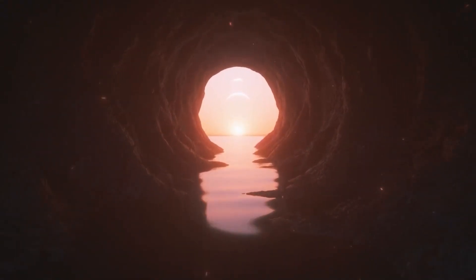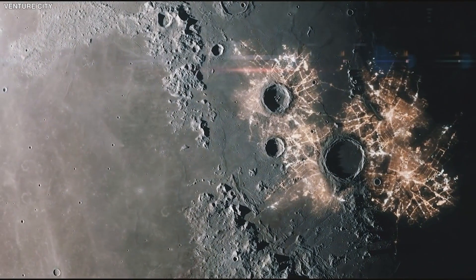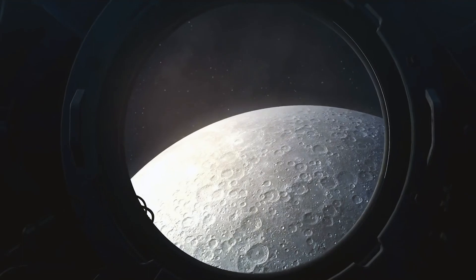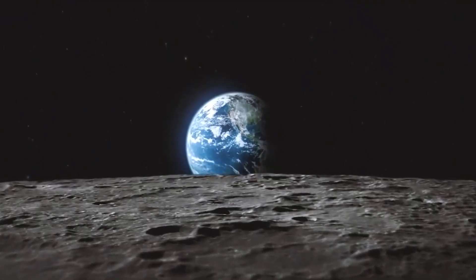Another problem is that the bright side of Proxima B is exposed to a lot of X and UV radiation. Hence, the likelihood of habitability on the bright side significantly decreases. On the other hand, it becomes more vivid that there might be life there.